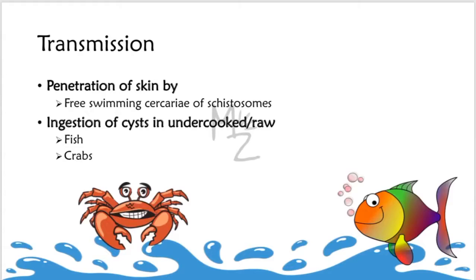Transmission. Transmission to humans takes place either via penetration of skin by the free-swimming cercariae of schistosome, or via ingestion of cysts in undercooked or raw fish or crabs in Clonorchis and Paragonimus infection, respectively.